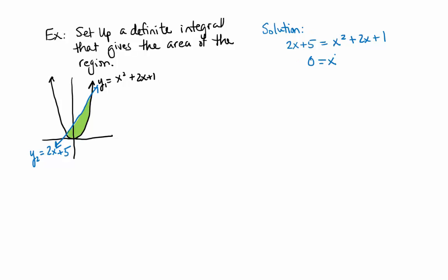So we have X squared. I'm going to subtract 2X. It cancels out. Subtracting 5, we get minus 4. So this is an easy quadratic equation.